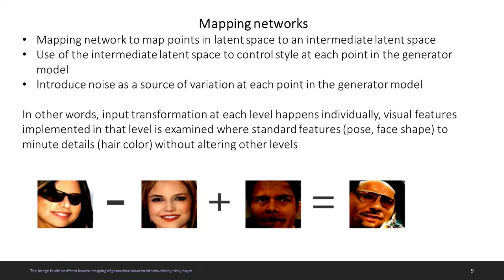In simple terms, an input transformation at each level happens individually. Visual features implemented at that level are examined — from standard features such as pose, face shape, to minute details such as hair color — without altering other levels. For example, suppose I take an image of a woman wearing glasses. If I extract that feature of wearing glasses and mix it with another human face, I can generate an image of another person wearing glasses. This is what happens in a StyleGAN.